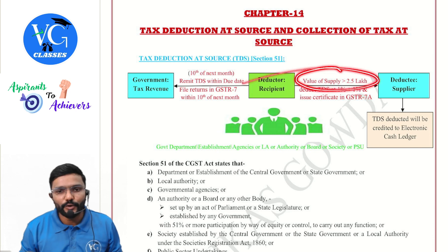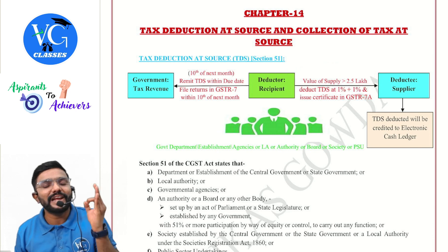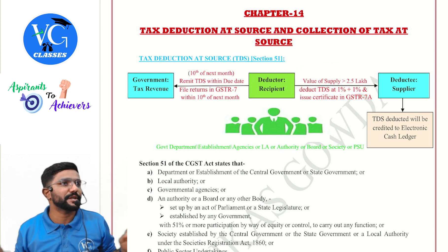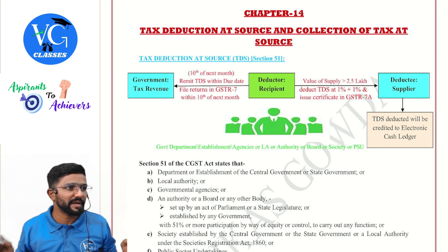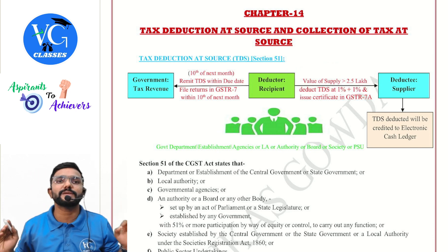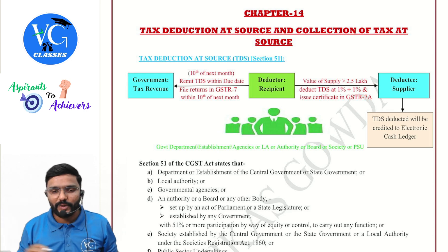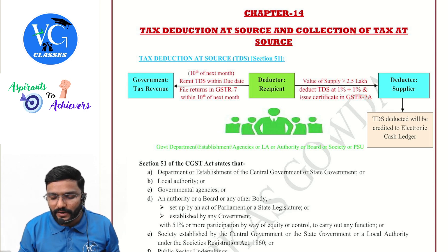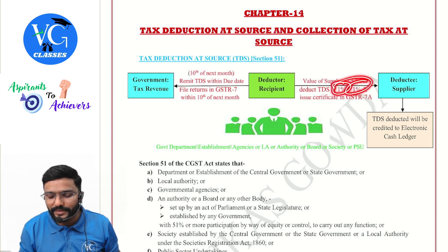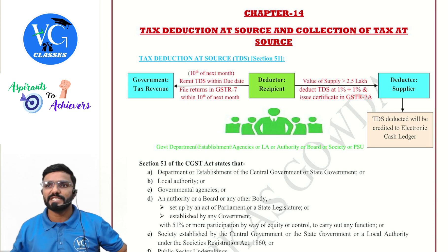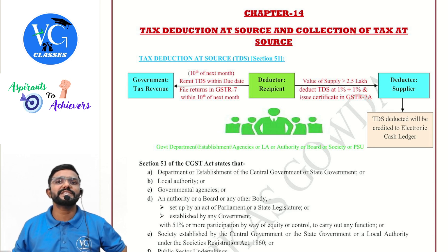TDS is deducted only when the value of supply under a contract exceeds ₹2,50,000 per annum. What is the rate of TDS? It is 1% CGST plus 1% SGST — that is, 1+1. Or if it is an interstate supply, straight away 2% IGST.